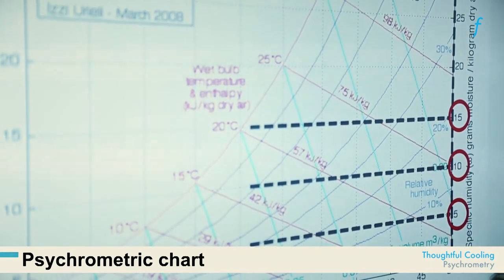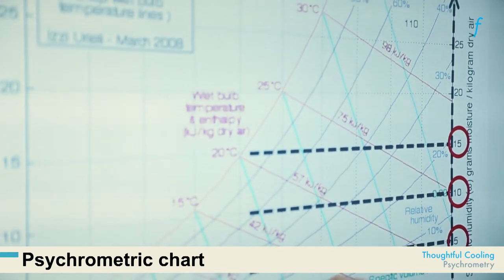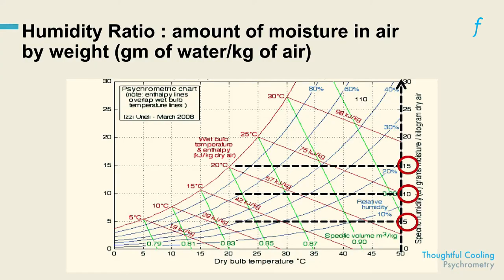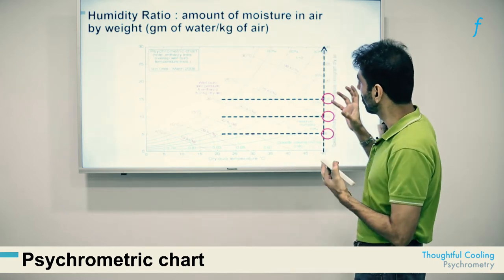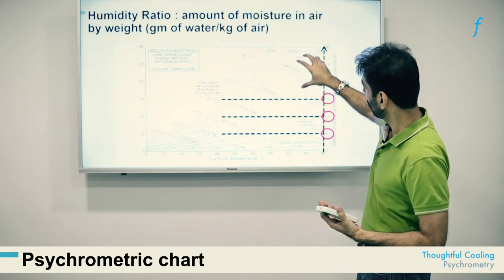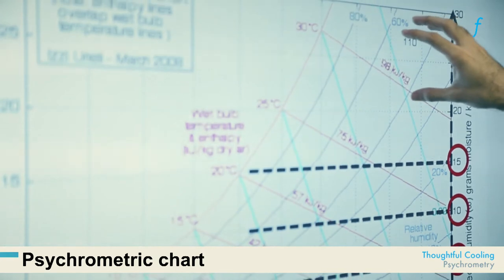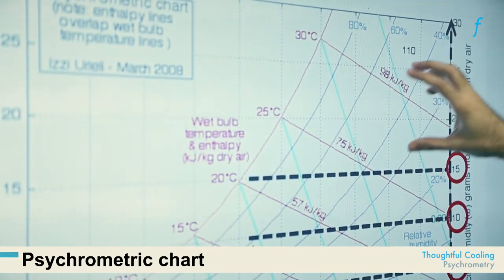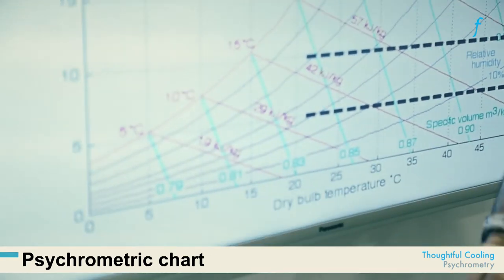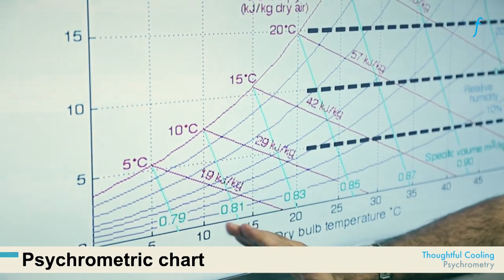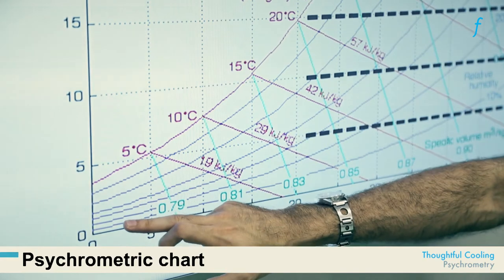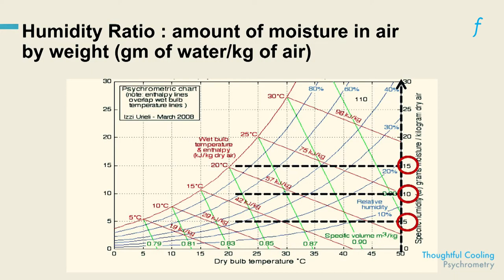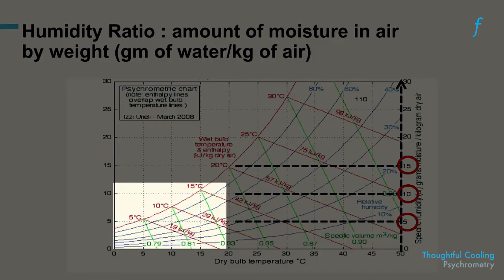Specific humidity increases from 0 to 30 on the y-axis. Combining temperature and humidity: as you go right you get hotter, and as you go up you get wetter. So a Chennai-type climate — hot and wet — would be represented in the upper right region, a cold place like Shimla in the lower left, and a dry cold place in the lower left dry region.